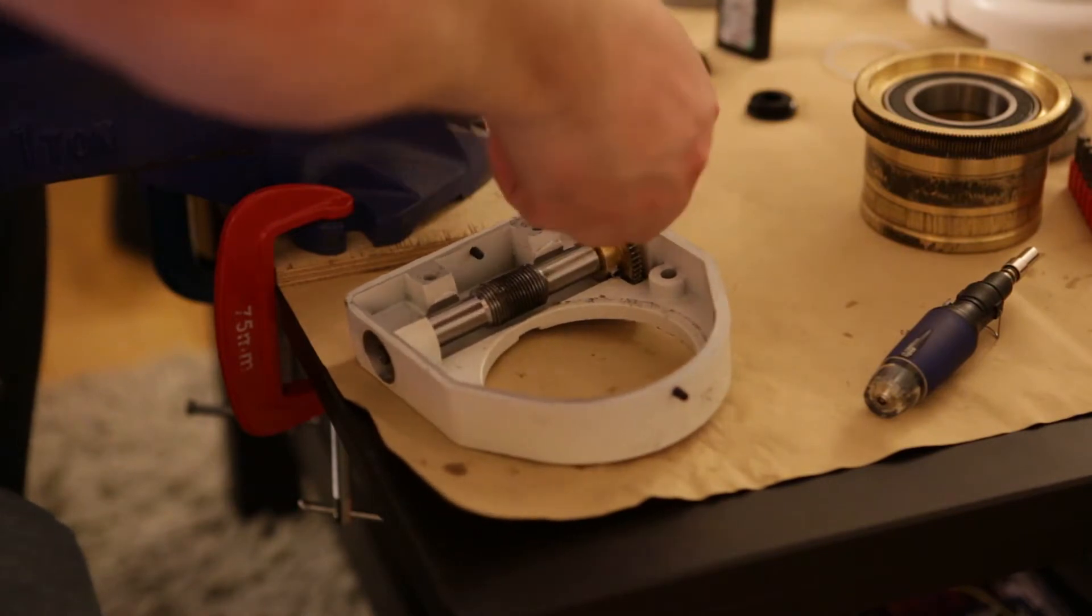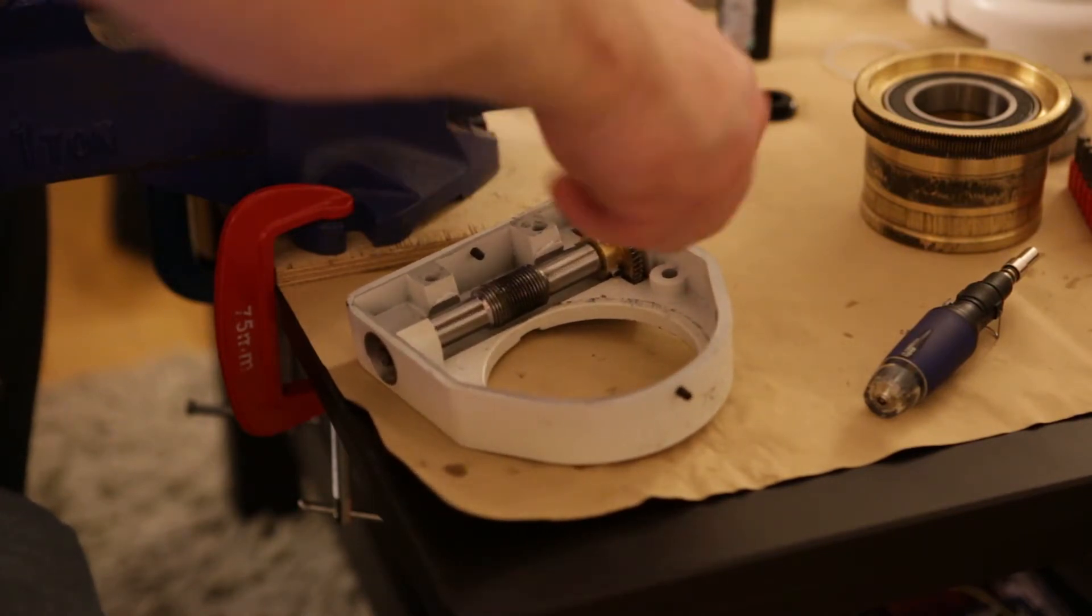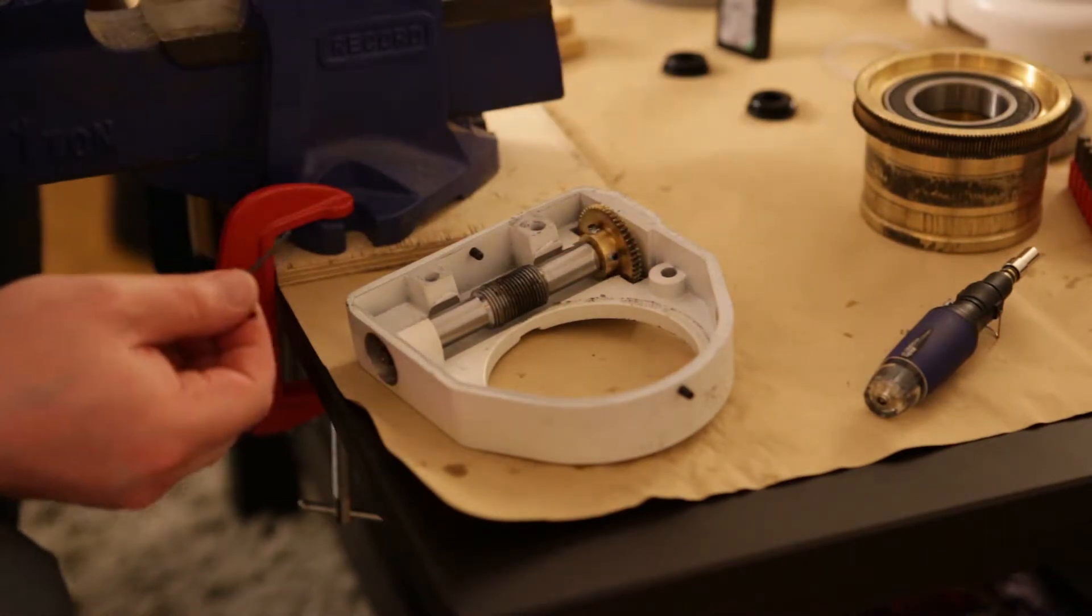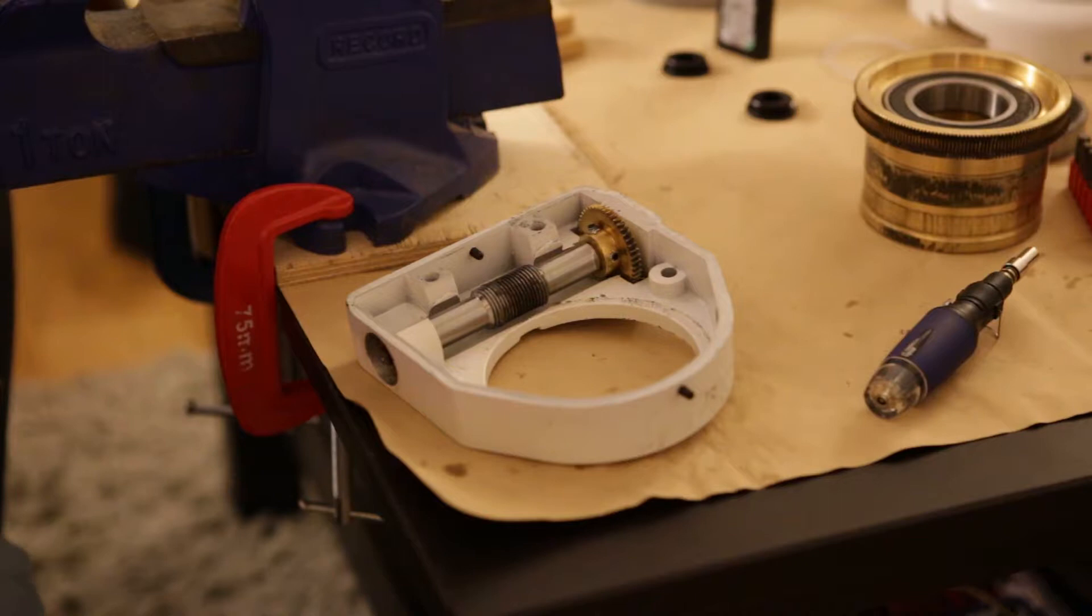It's coming out. Right. So now we have the grub screws loose. We need to remove the gear.